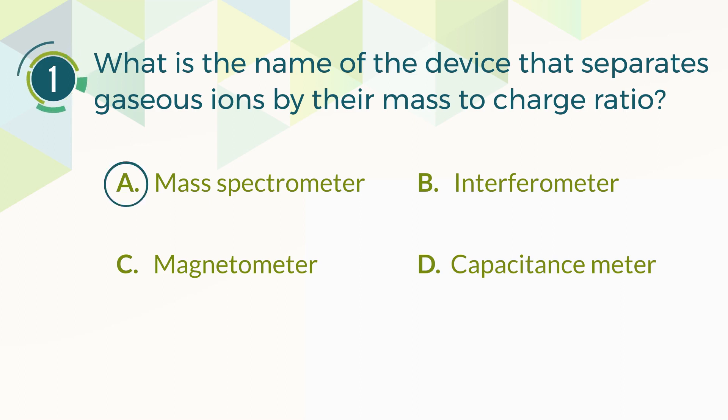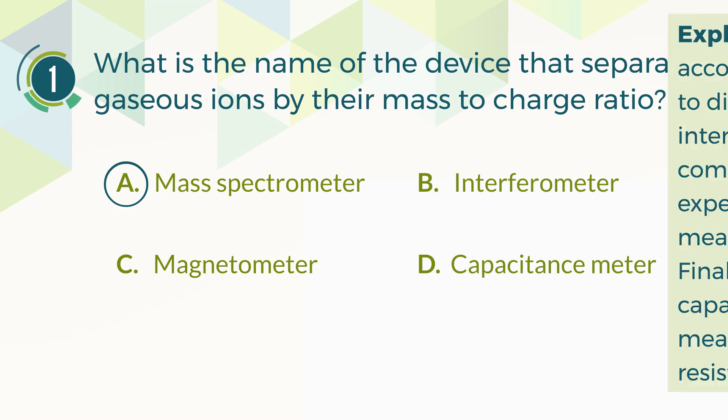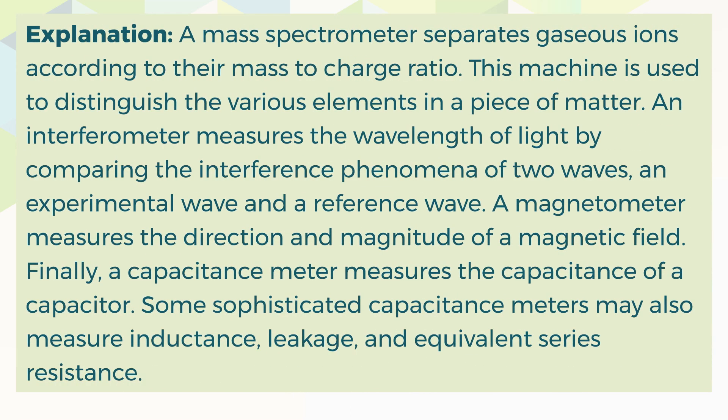The correct answer is A, mass spectrometer. A mass spectrometer separates gaseous ions according to their mass-to-charge ratio. This machine is used to distinguish the various elements in a piece of matter. An interferometer measures the wavelength of light by comparing the interference phenomena of two waves: an experimental wave and a reference wave. A magnetometer measures the direction and magnitude of a magnetic field.